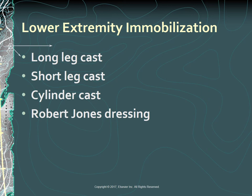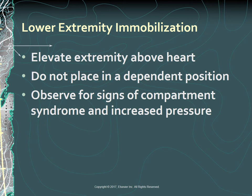A Robert Jones dressing may be used temporarily to limit mobility of a joint. It is composed of soft padding materials, splints, and an elastic wrap or bias-cut stockinette. After application of the lower extremity cast or dressing, the extremity should be elevated on pillows above the heart level for the first 24 hours. After the initial phase, a cast extremity should not be placed in a dependent position because of the possibility of excessive edema. After cast application, observe for signs of compartment syndrome and increased pressure, especially in the heel, anterior tibia, head of fibula, and malleola.